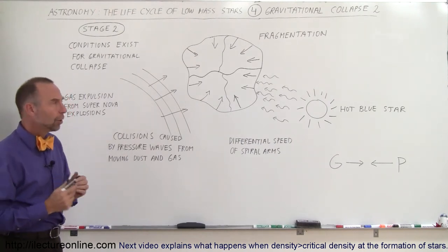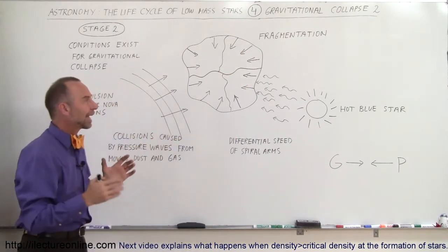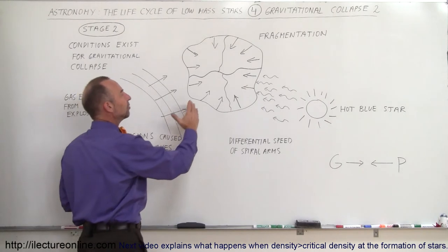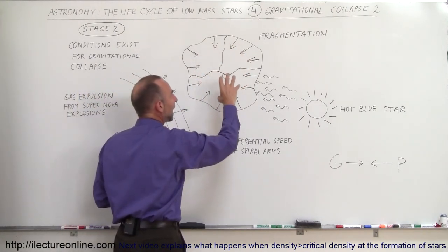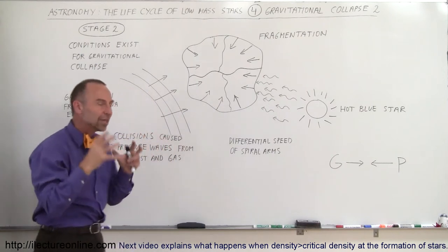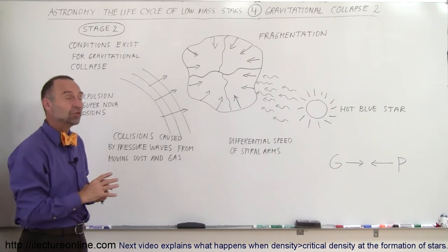What we also found was that as this would then happen, sometimes we have a situation where the cloud of dust and gas would fragment into different pieces. So for example, here I have a situation where we have four different pieces and each piece in itself would then continue the gravitational collapse, causing multiple stars to be formed in the same region.